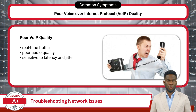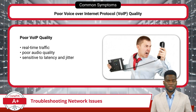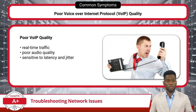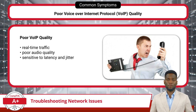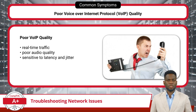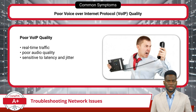Addressing poor Voice over IP quality involves optimizing network configurations to minimize latency and jitter. This may include prioritizing VoIP traffic over other data types. Additionally, upgrading network hardware and software, such as routers and switches, can help improve the reliability and stability of VoIP connections.